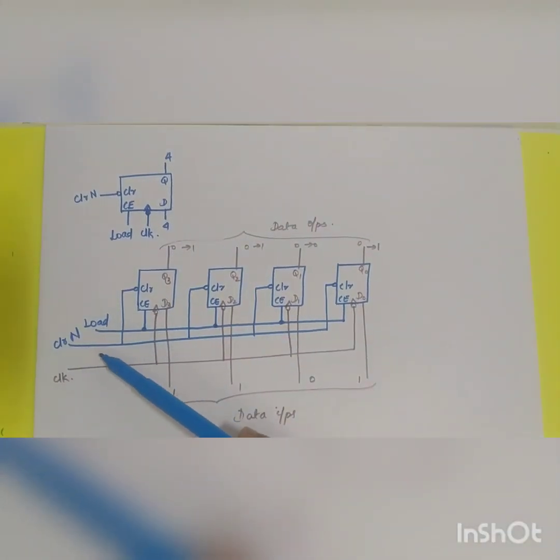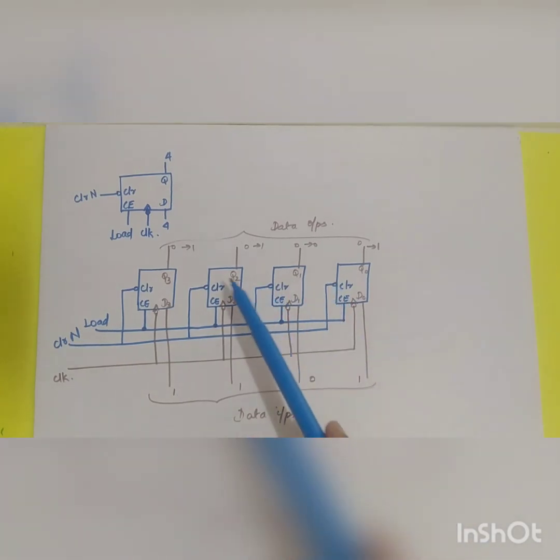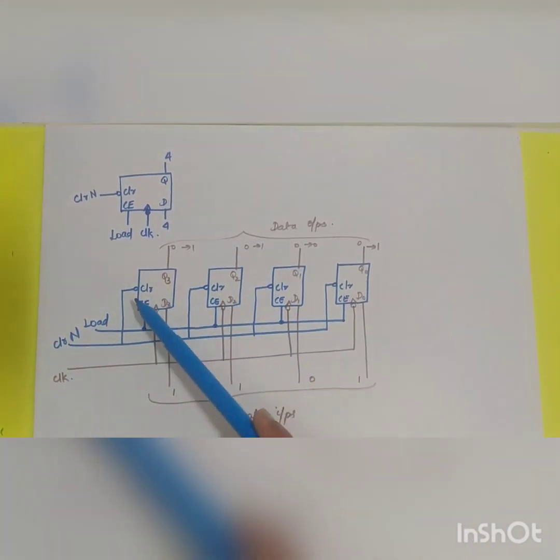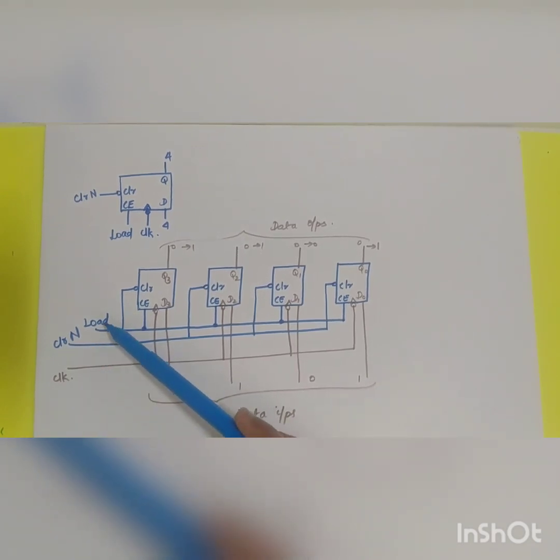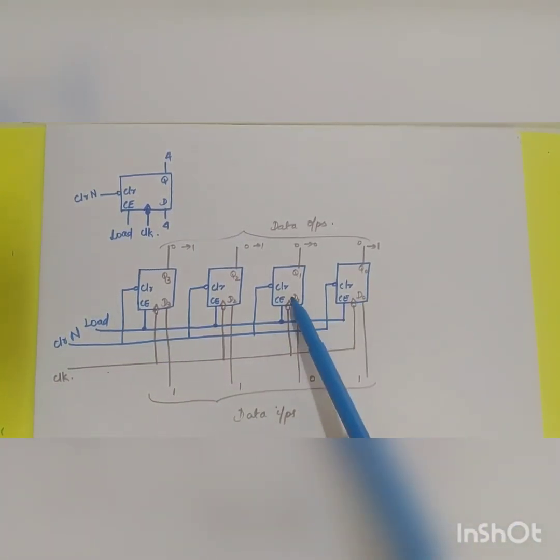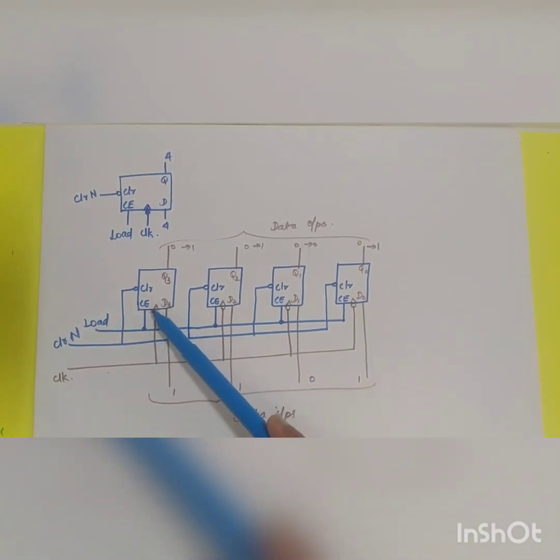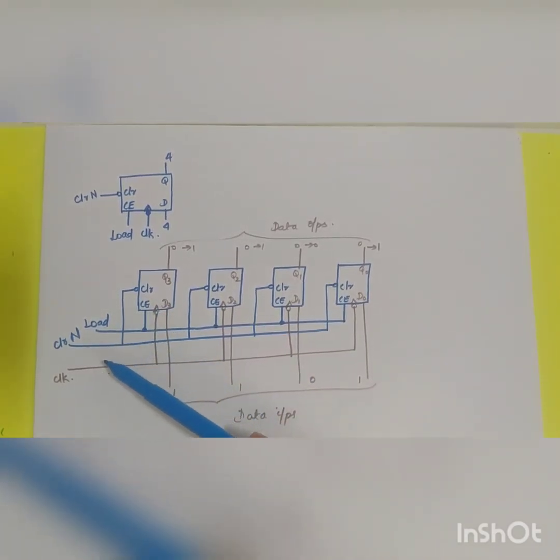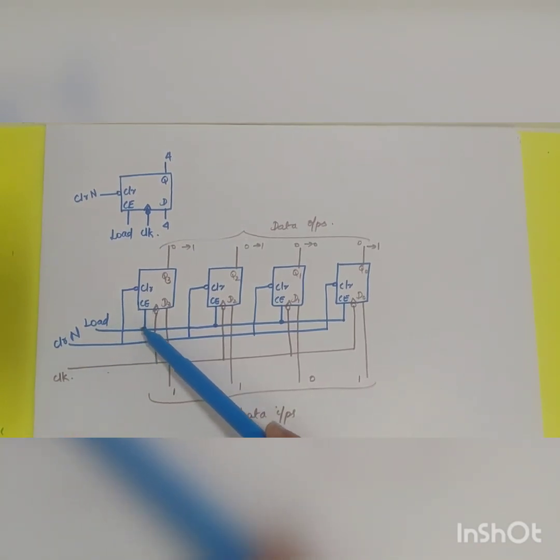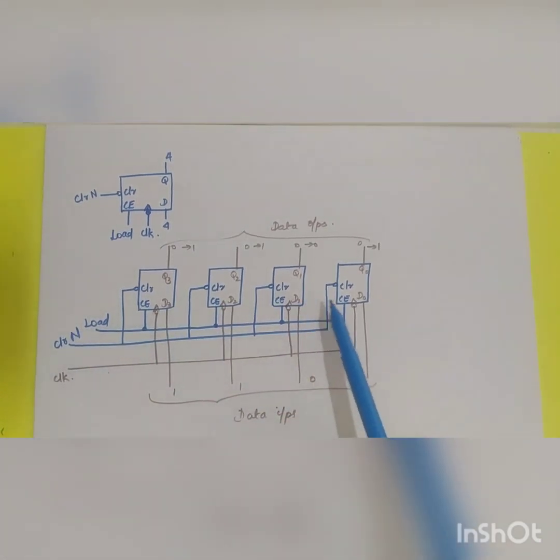Here instead of using an AND gate, clear will be given. There is no difference in any other data: data input, data output and clear. The only difference is the load and the clock are given separately. The clock will be given separately which will be activated during the falling edge. And the load will be given to the clock enabled.